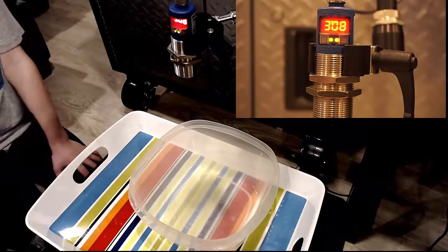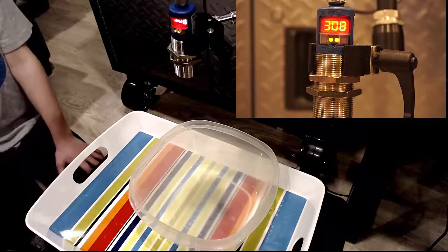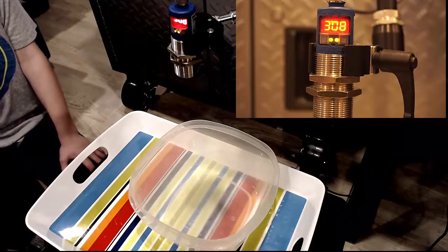Now we are going to trick the sensor. We are going to put cotton in the bowl which should decrease the distance. Right?